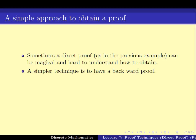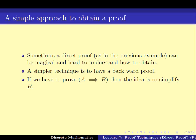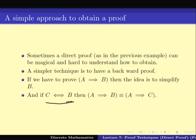Now there is a simpler technique to attack this problem, called the backward proof — it starts from the conclusion and works backward. So if I have to prove A implies B, the idea is to simplify B and get something simpler. If in the end I can prove that B is equivalent to C, then proving A implies B is the same as proving A implies C, which can be easier if C is a simpler expression.